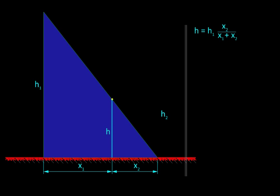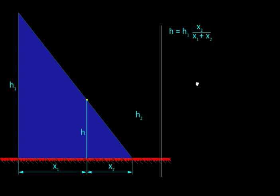So let us do some rough work here. h is equal to h1 times x2 upon this whole distance x1 plus x2.